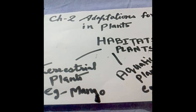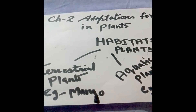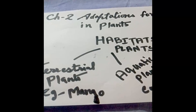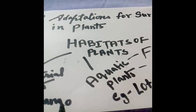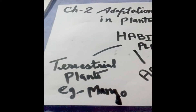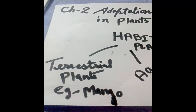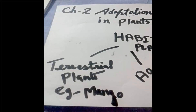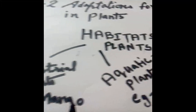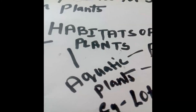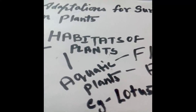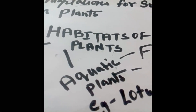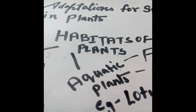Hello, dear students. We are again with the next topic of chapter number two: adaptation for survival in plants. We have seen habitats of plants, including terrestrial plants with their different types of examples. Now we have to see the next topic, that is aquatic plants. The term aquatic is one you are very familiar with.